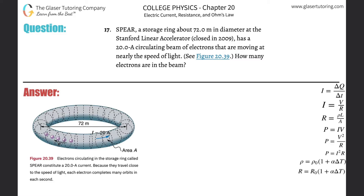Number 17. SPEAR, a storage ring about 72 meters in diameter at the Stanford Linear Accelerator, which by the way was closed in 2009, has a 20 amp circulating beam of electrons that are moving at nearly the speed of light. How many electrons are in the beam? The problem is a little confusing — it seems like there's a lot of disjoint information.